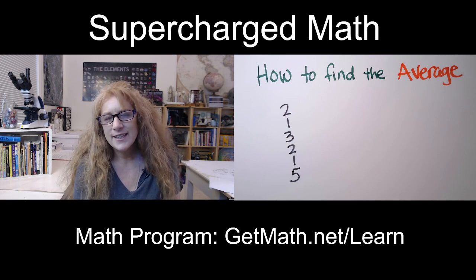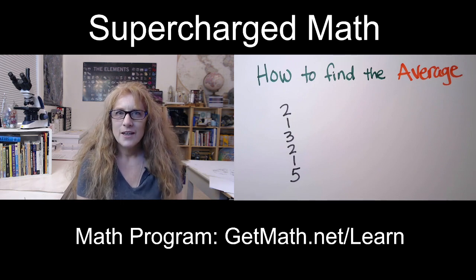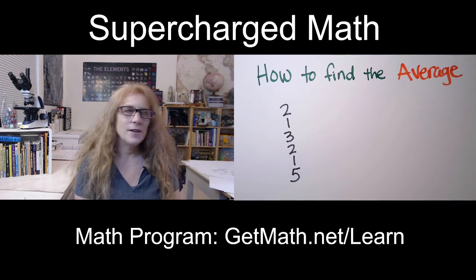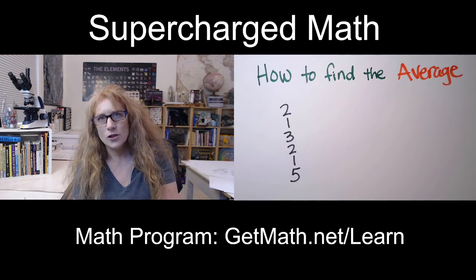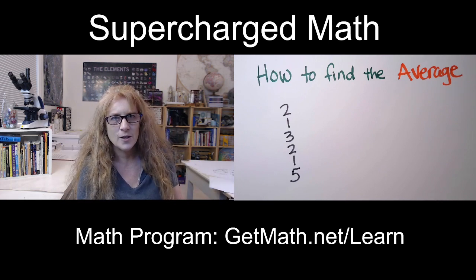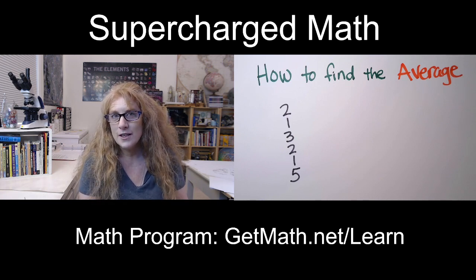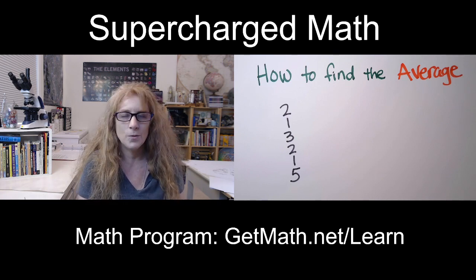One of the things we learn in data and statistics with a math class is how do we find an average? Because it's useful to know, on average, people order mostly chocolate ice cream, or people usually spend about $7 when they go to the theater just on snacks. So it's useful information for us, especially in business, especially when we're in marketing.